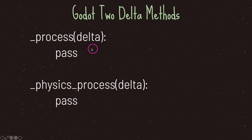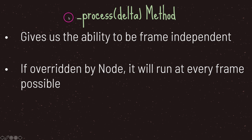Notice how both of these methods have an argument. They do not require you to return back a value, and as a quick refresher the delta parameter is a float value. The process virtual method gives us the ability to be frame rate independent. If overridden by a node, it will run at every frame possible, which means it prefers speed over consistency. The process virtual method is run with the main loop.